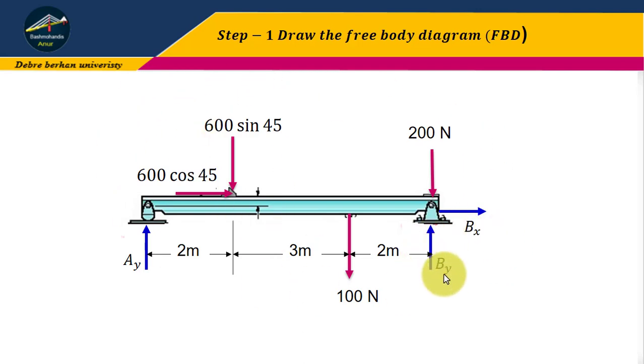In this free body diagram, at point A we have Ay reaction. At point B we have By and Bx reactions. There's a 200 Newton downward force and a 100 Newton force.